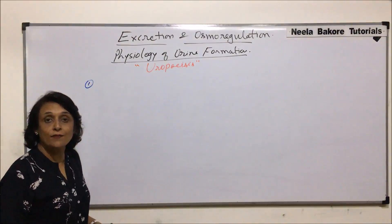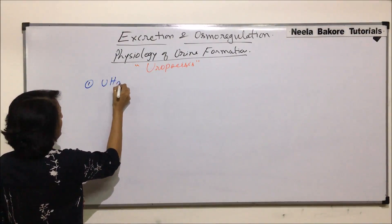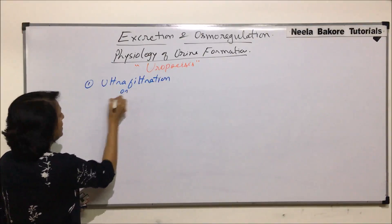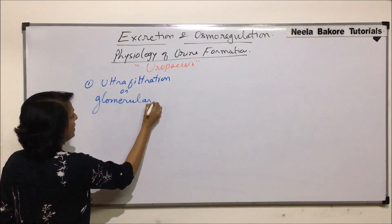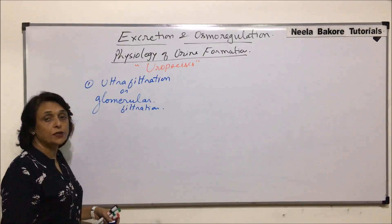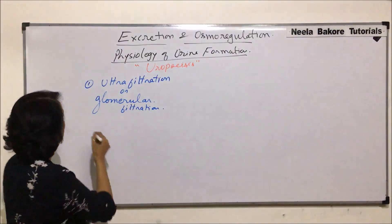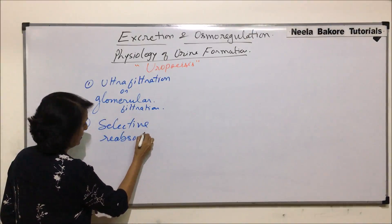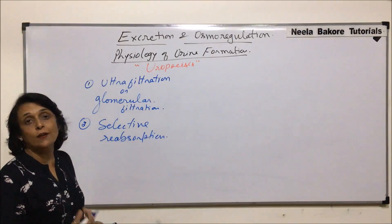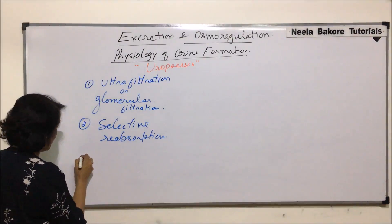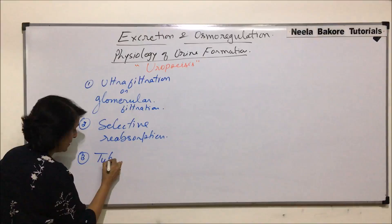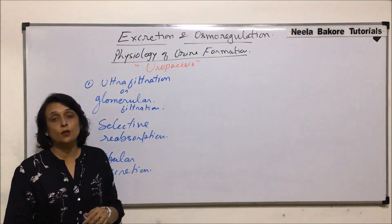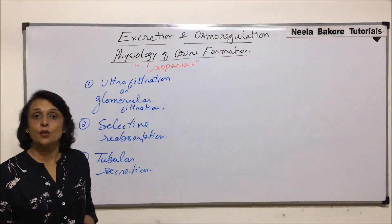The first step is known as ultrafiltration or glomerular filtration. The second step is selective reabsorption — certain important things which get filtered need to be reabsorbed. And the third is known as tubular secretion, where the cells of the tubule help in secretion of certain things. These are the three steps in which urine formation takes place.